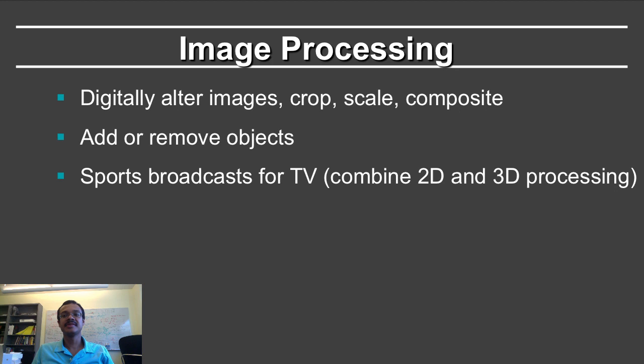Image processing has been a very significant aspect of what we see on the screen. We rarely see images that have not been processed in some way. You can alter images by cropping, scaling, and compositing them, or even add or remove objects. Sports broadcasts for television combine 2D and 3D processing — whether showing the world record line at the Olympics, which swimmer is in each lane, or even showing different advertisements to different regions. All of these things are possible through smart image and video processing.